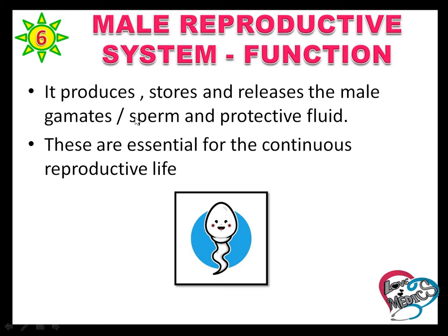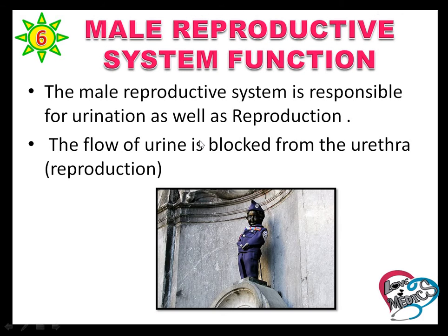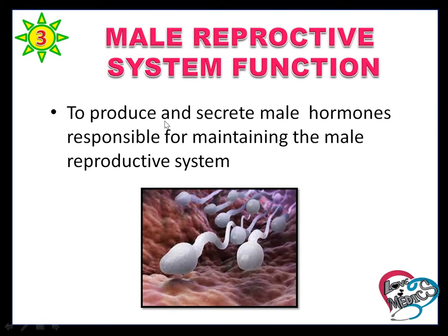Functions of the male reproductive system: it produces, stores, and releases the male gametes, that is sperm, and it secretes protective fluids. It is essential for continuous reproductive life. Unlike the female reproductive system, which is responsible for reproduction only, the male reproductive system is responsible for urination as well as reproduction.